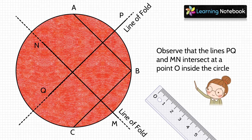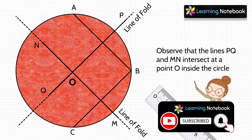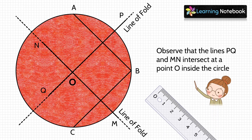We observe that lines PQ and MN intersect at a point O inside the circle, where O is the center of the circle. This was the first way to find the center of any given circle.